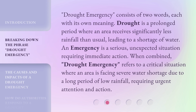Drought emergency consists of two words, each with its own meaning. Drought is a prolonged period where an area receives significantly less rainfall than usual, leading to a shortage of water. An emergency is a serious, unexpected situation requiring immediate action. When combined, drought emergency refers to a critical situation where an area is facing severe water shortage due to a long period of low rainfall, requiring urgent attention and action.